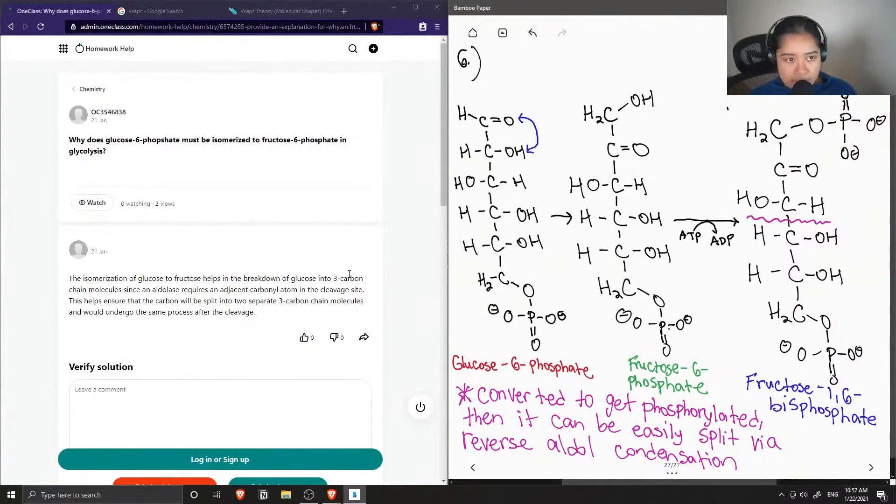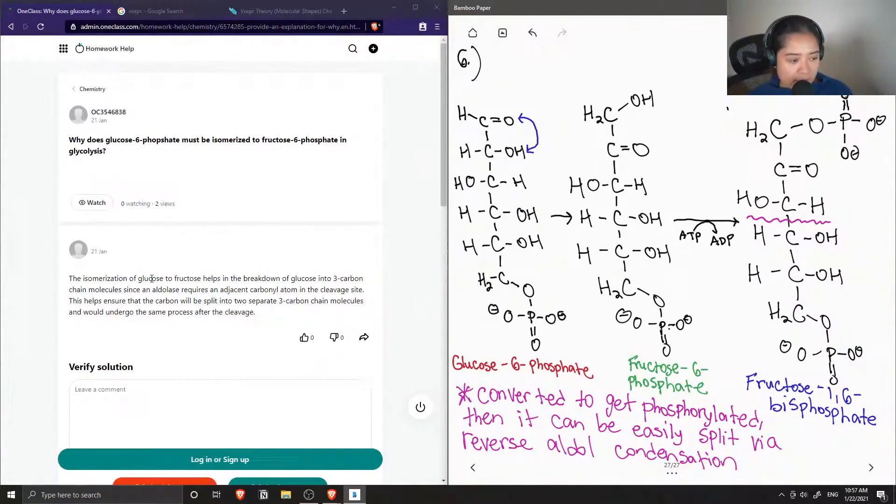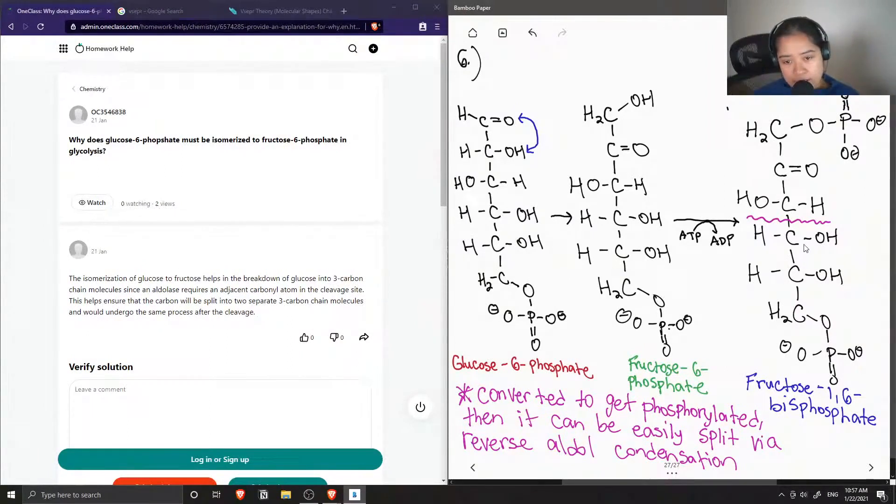Okay, so let's see what the junior tutor said. They said that the isomerization of glucose to fructose helps in the breakdown of glucose into three carbon chain molecules since an aldolase requires an adjacent carbonyl atom in the cleavage site. This helps ensure that the carbon will be split into two separate three carbon chain molecules and would undergo the same process after the cleavage. So notice that after this cleavage, then you would get the three carbon chain molecules, and the aldolase requires an adjacent carbonyl atom, so in this case it is this carbon right here. So this solution is correct.